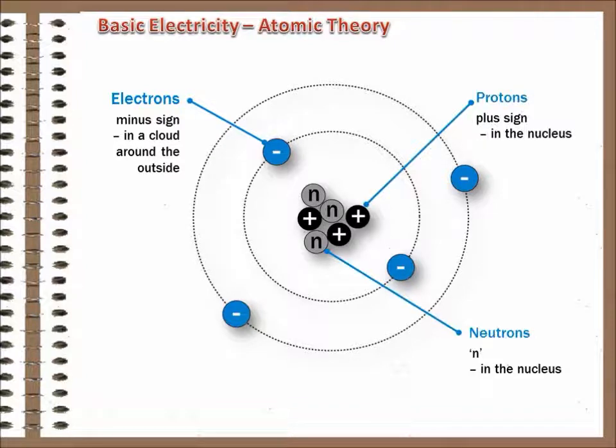The protons are identified by the plus signs and the neutrons have an N for no charge. These signs are assigned to each of the particles because of the way they behave to each other and to the surrounding world.